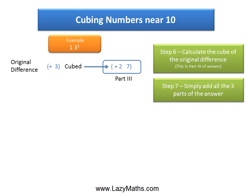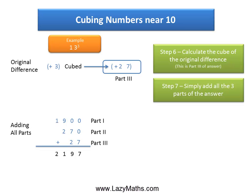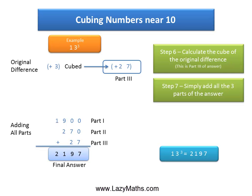Now simply take all three parts, put them one over the other, and add all of them together. We get 1,900 plus 270 plus 27 equals 2,197, and that's the final answer. So 13 cubed is 2,197. Thank you.